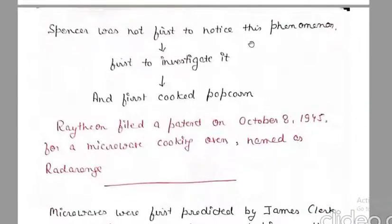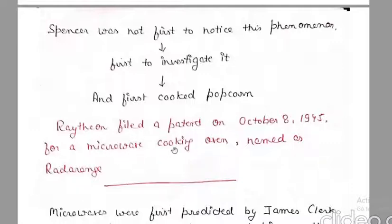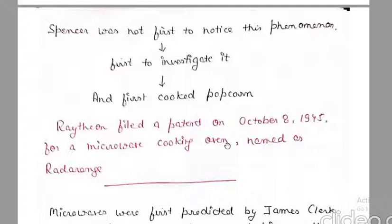Percy Spencer was not the first to notice this phenomenon, but he was the first to investigate it, and afterward he first cooked popcorn using microwaves. Raytheon, the company he worked for, filed a patent on October 8, 1945 for a microwave cooking oven, and that cooking oven was named 'Radarange'. Percy Spencer's investigation of this property of microwaves is why we see microwave cooking ovens today.